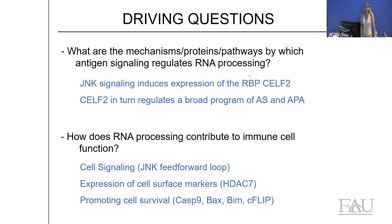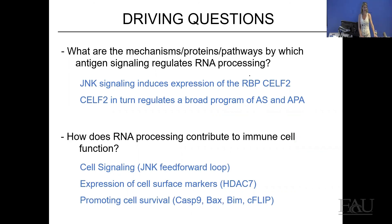The transfection efficiency with morpholino oligos is actually very high — 80 to 90% based on fluorescent tagging. They transfect much more readily than siRNAs or plasmids, and while they are less sharp, that is actually why we use them.